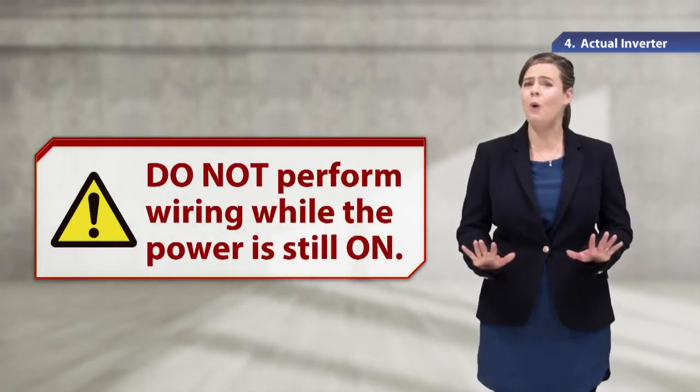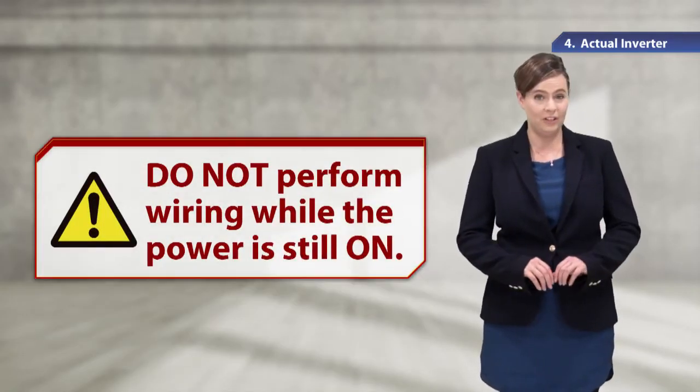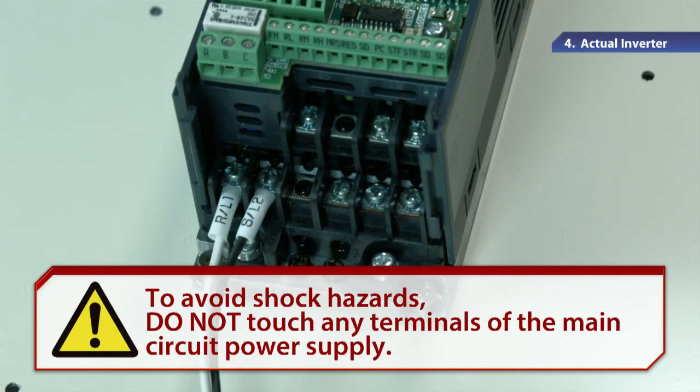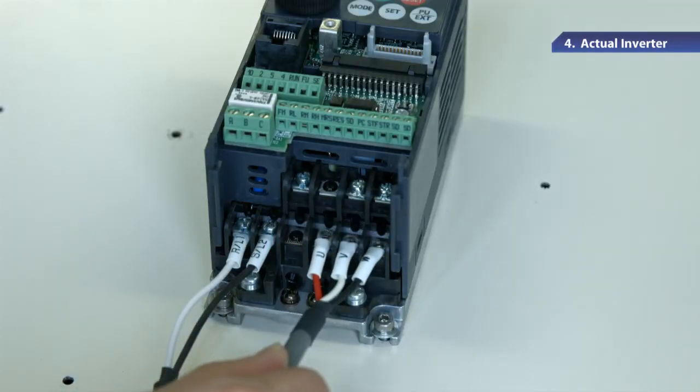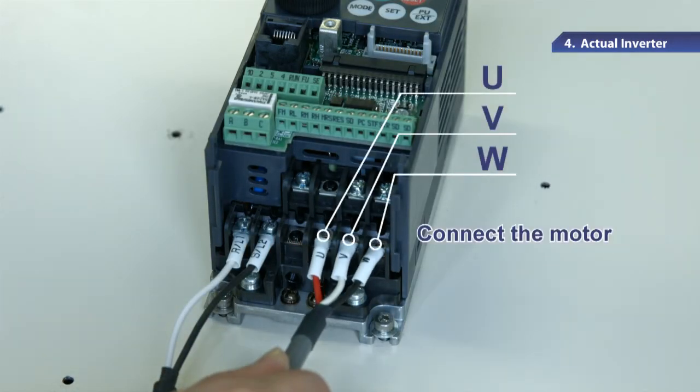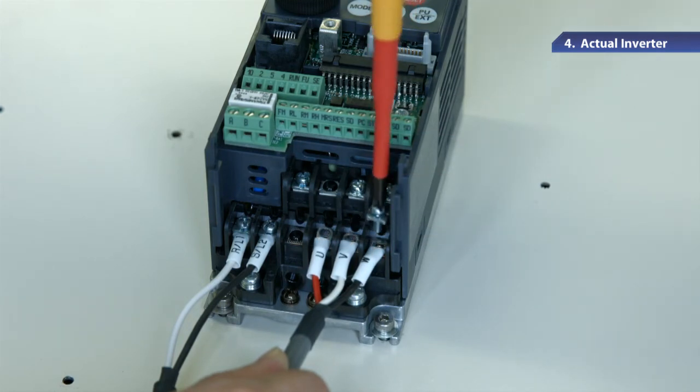Let's connect the motor next. Do not attempt any wiring work while the power is still on. To avoid shock hazards, do not touch any terminals of the main circuit power supply. Use the main circuit terminal U, V, and W of the inverter to connect the motor to the inverter.